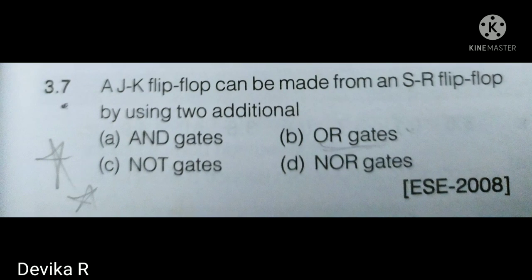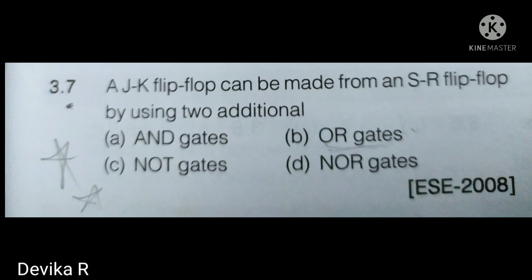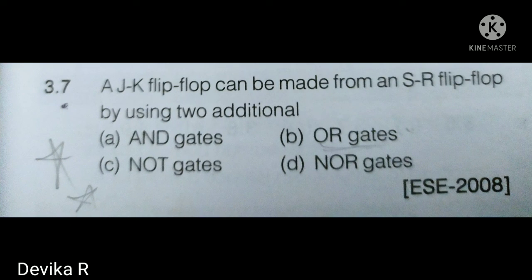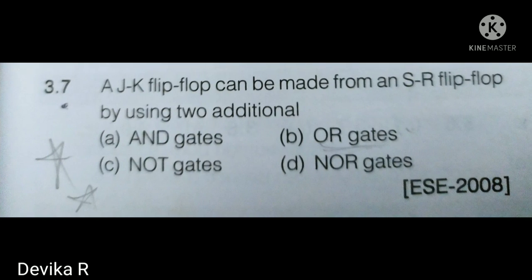Next: a JK flip-flop can be made from an SR flip-flop by using two additional AND gates. Sorry — I initially said OR gates, but the correct answer is AND gates. By connecting two AND gates in the SR flip-flop, we get the JK flip-flop.